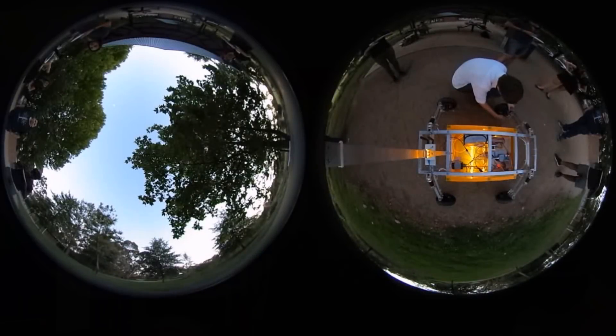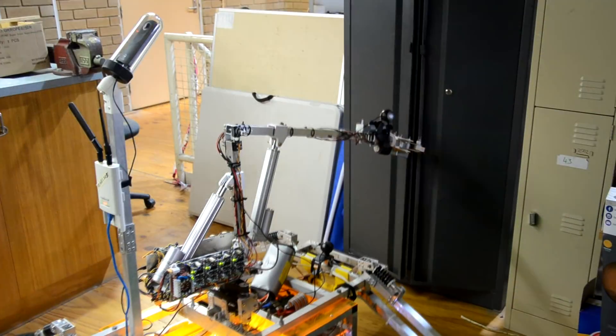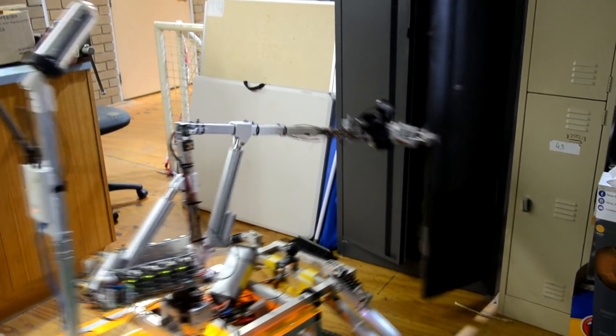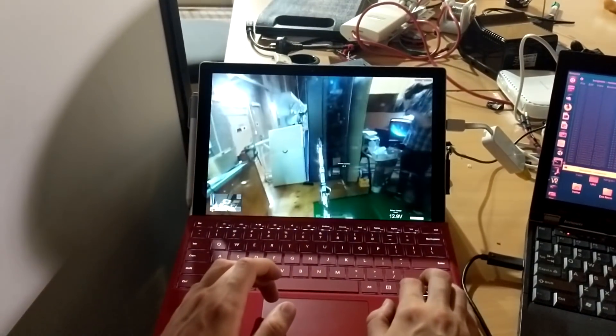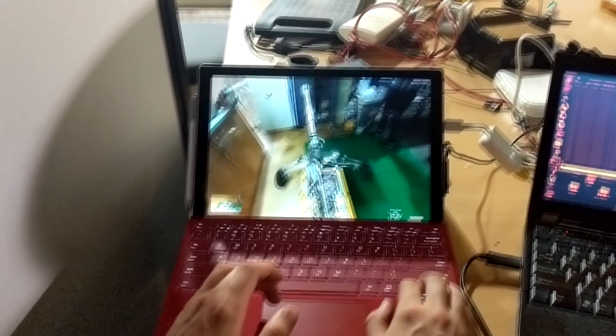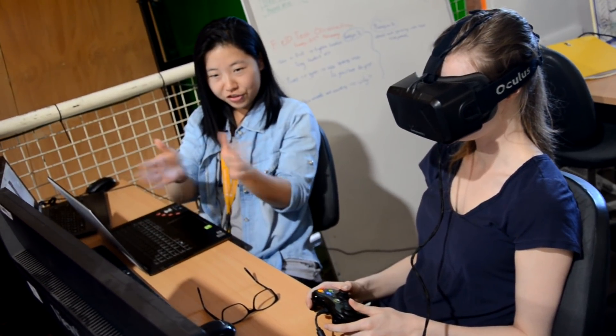For our situational awareness of the rover, we're implementing a 360 camera and an array of webcams, and we're accessing these via a Unity interface. This allows us to use VR technology, such as the Oculus Rift, to connect to this and provide an immersive environment for the user.